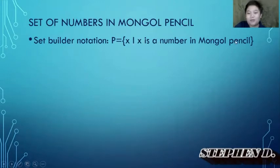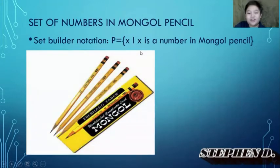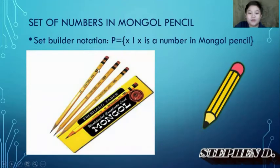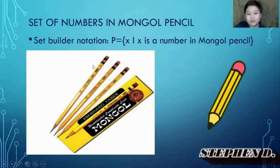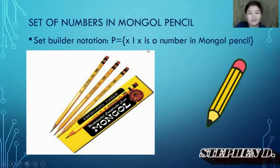Again, x is represented by one, two, and three, which are numbers in the Mongol pencil. That's how you write it in set builder notation.